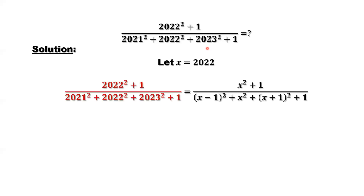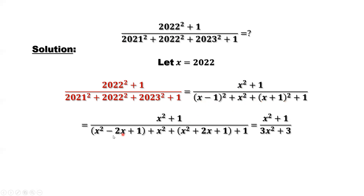You can see here: (x minus 1) squared and (x plus 1) squared, with x in the middle. Expanding gives x squared minus 2x plus 1, and x squared plus 2x plus 1. The positive 2x and negative 2x cancel, so there is no x term in the denominator. We have x squared, x squared, x squared — that gives 3x squared. The constants 1, 1, and 1 add up to 3.